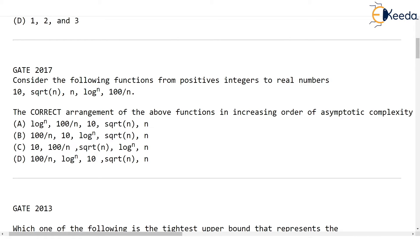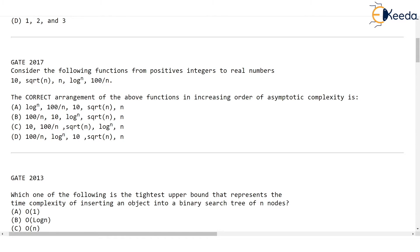They are asking you to arrange all these functions in increasing order of asymptotic complexity — that means figure out which function always gives the smallest value up to the one that gives the largest. When you see the series, you will obviously point to 10 or 100/n as the smallest. You might feel that 10 is such a small number, so 10 should come first, and 100 being large, 100/n should come second.